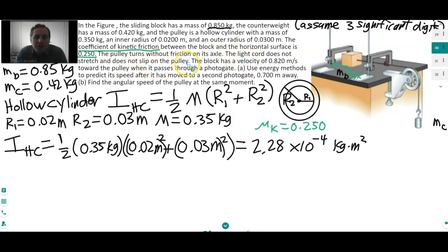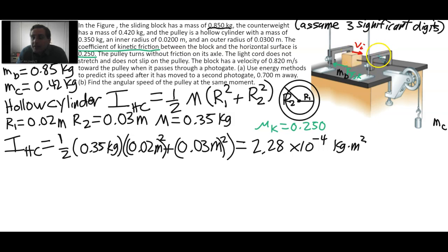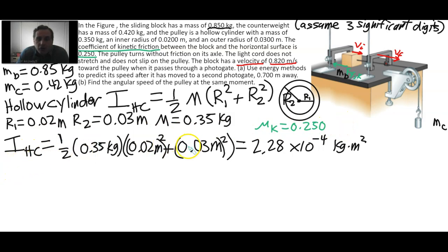The light cord does not stretch and does not slip on the pulley — we assume a massless cord with no elasticity. The block has a velocity of 0.820 meters per second toward the pulley when it passes through the first photogate, so v_initial = 0.82 m/s. We're looking for v_final when it passes the second photogate.